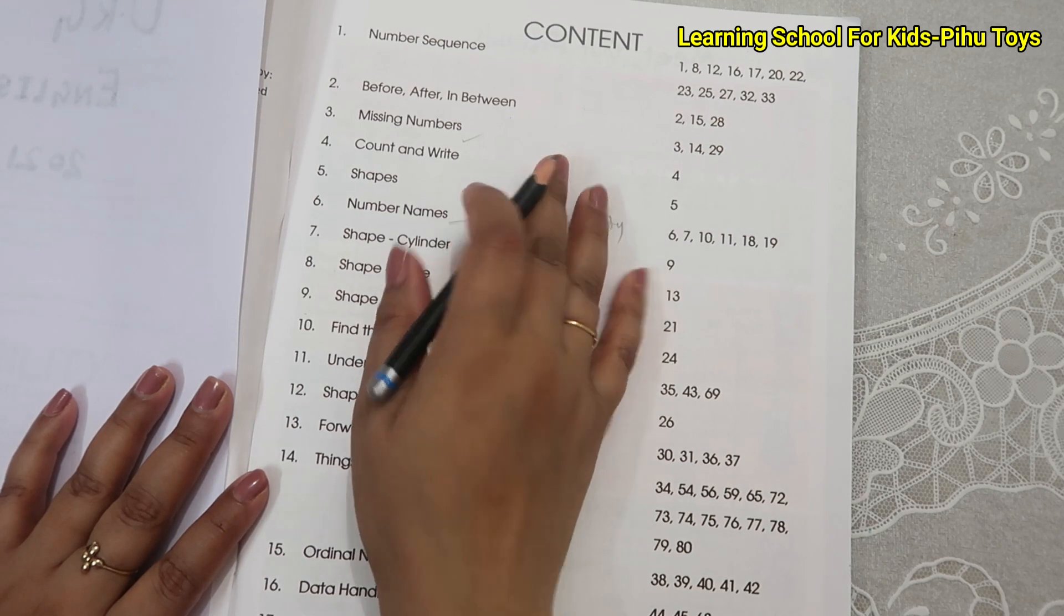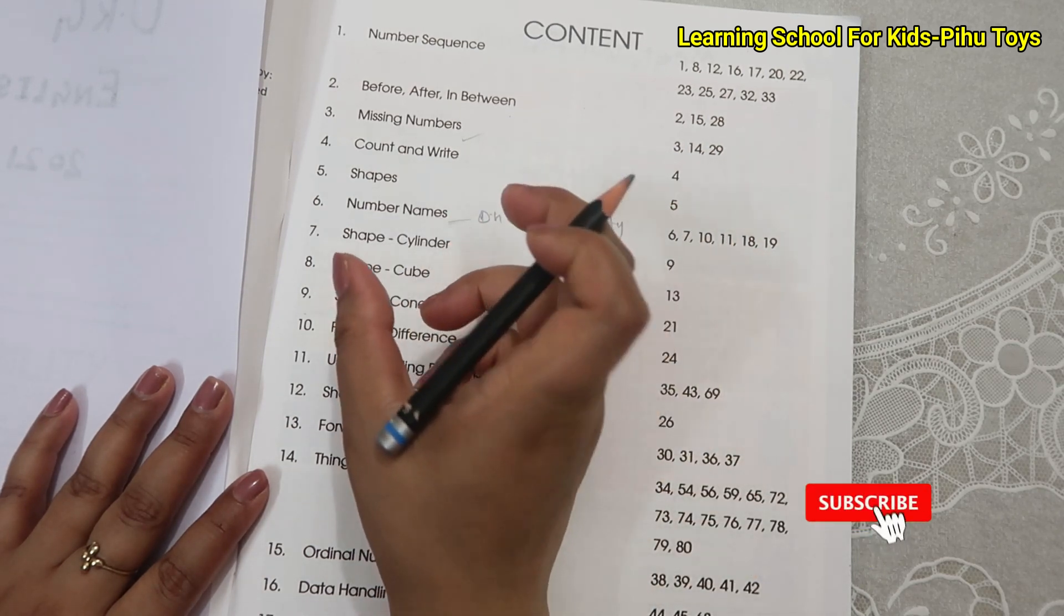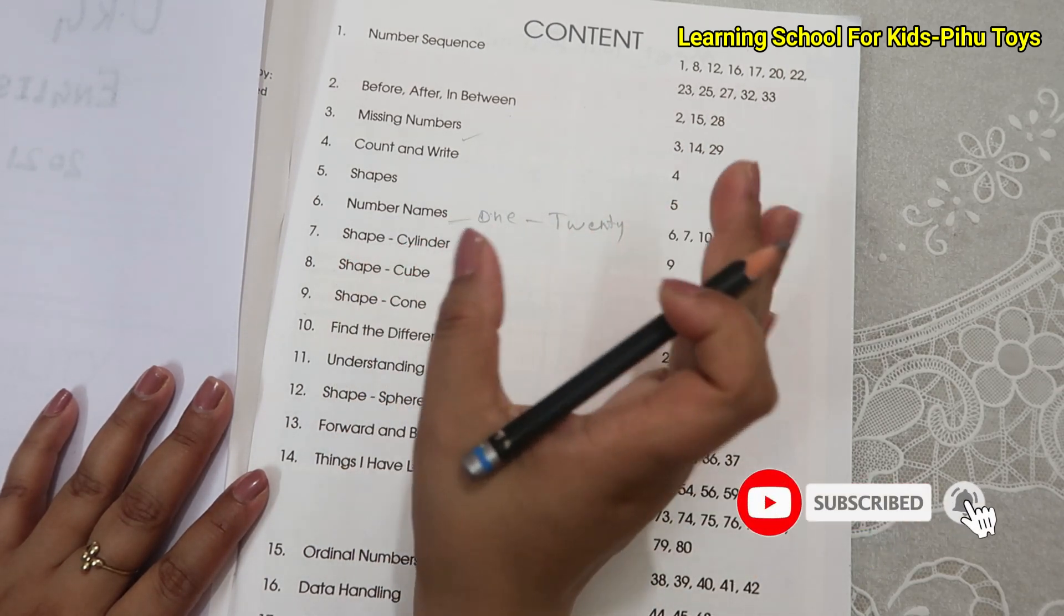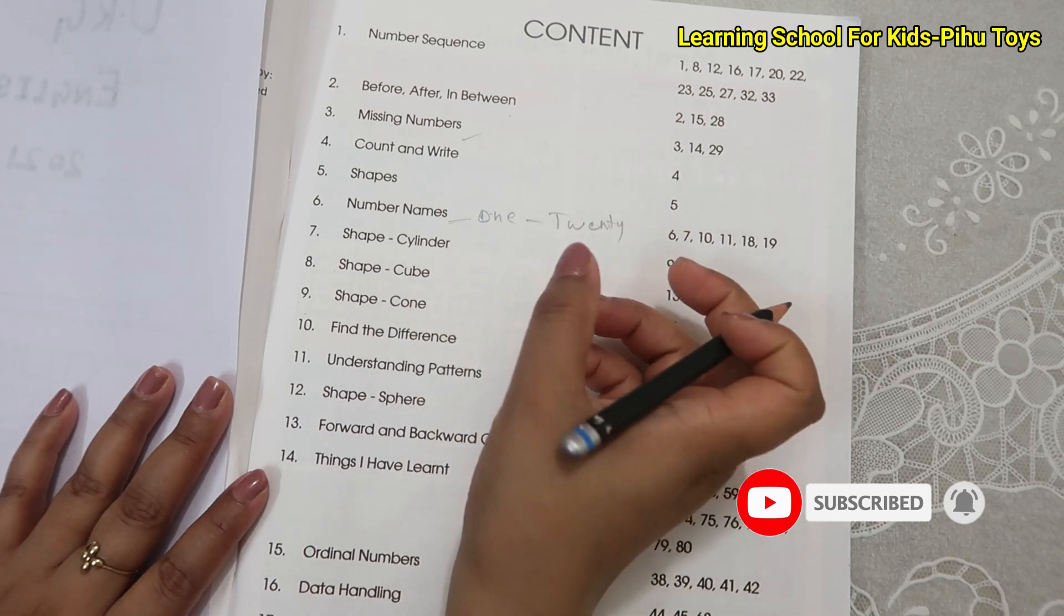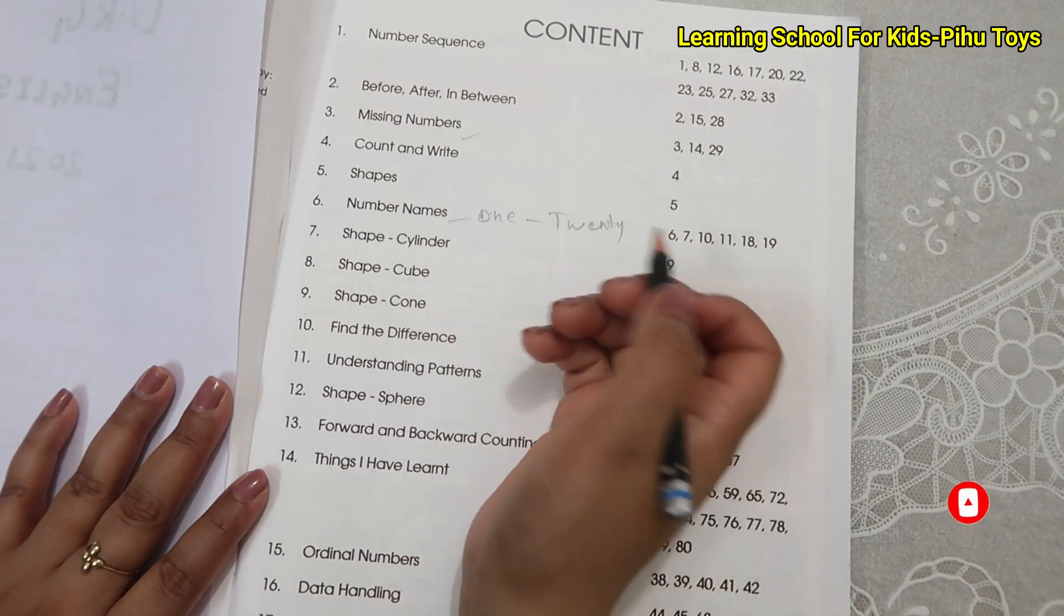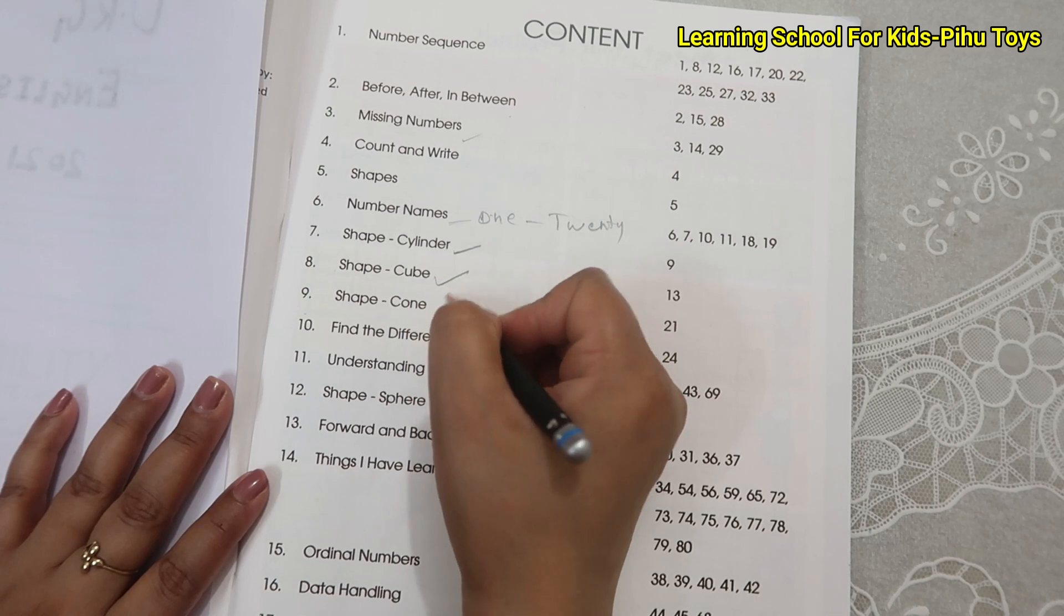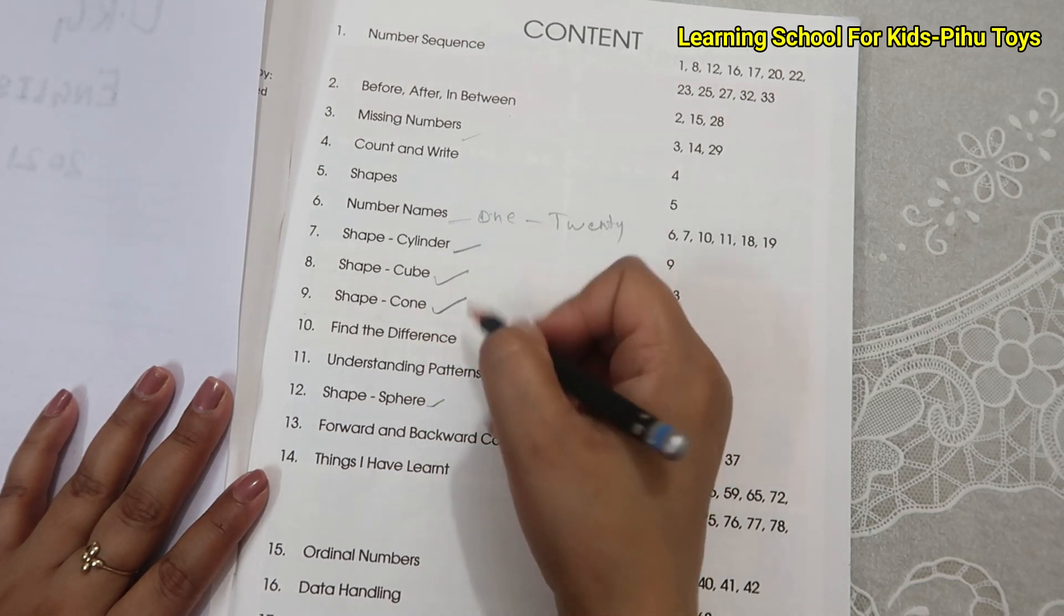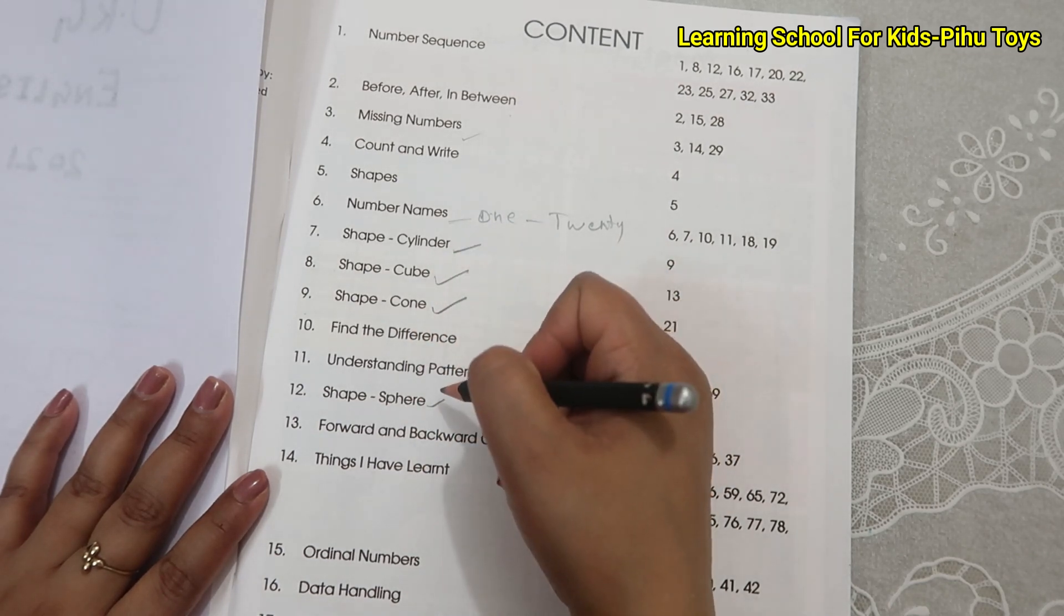The shapes we can study like in the LKG shapes, the normal shapes. Square, triangle, rectangle, star, they are all taught. The main shapes, the 3D shapes we can study. Cylinder, cube, cone and spheres. These shapes we can study.